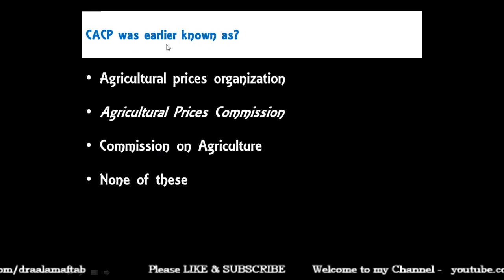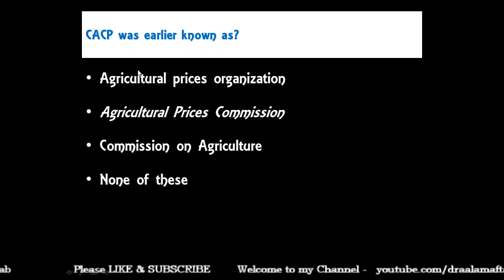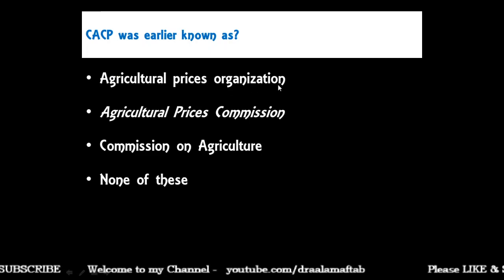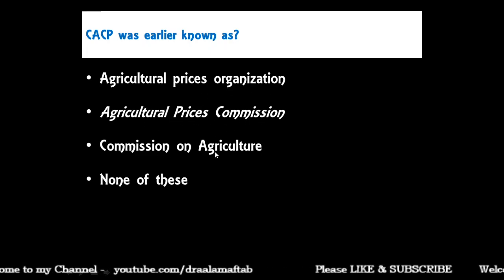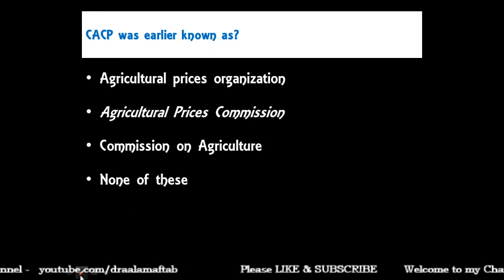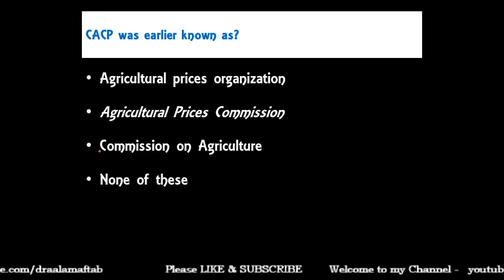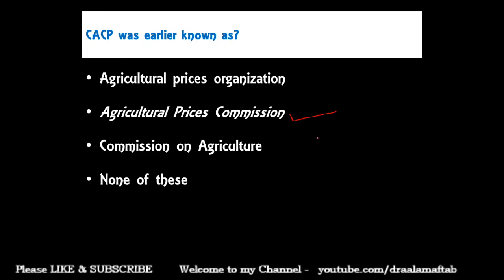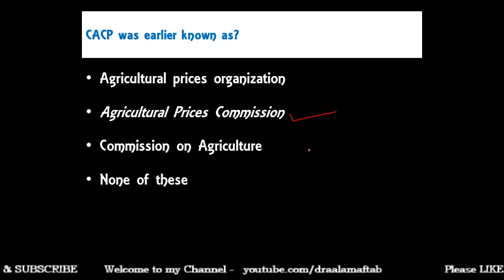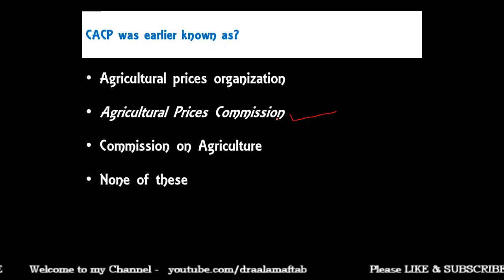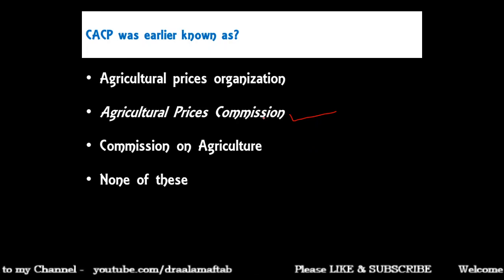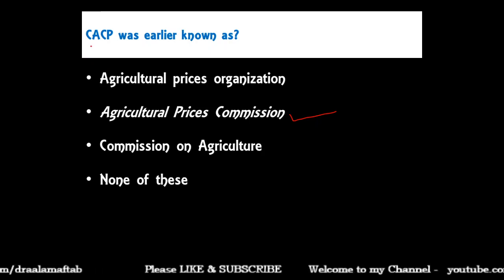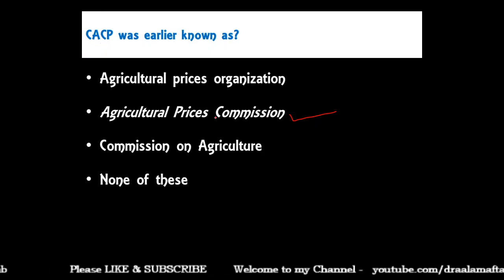CACP was earlier known as which of the following — Agriculture Prices Organization, Agriculture Prices Commission, Commission on Agriculture, or none of these? CACP was earlier known as Agricultural Prices Commission, established in 1965. It was later renamed as Commission for Agriculture Costs and Prices in 1985.